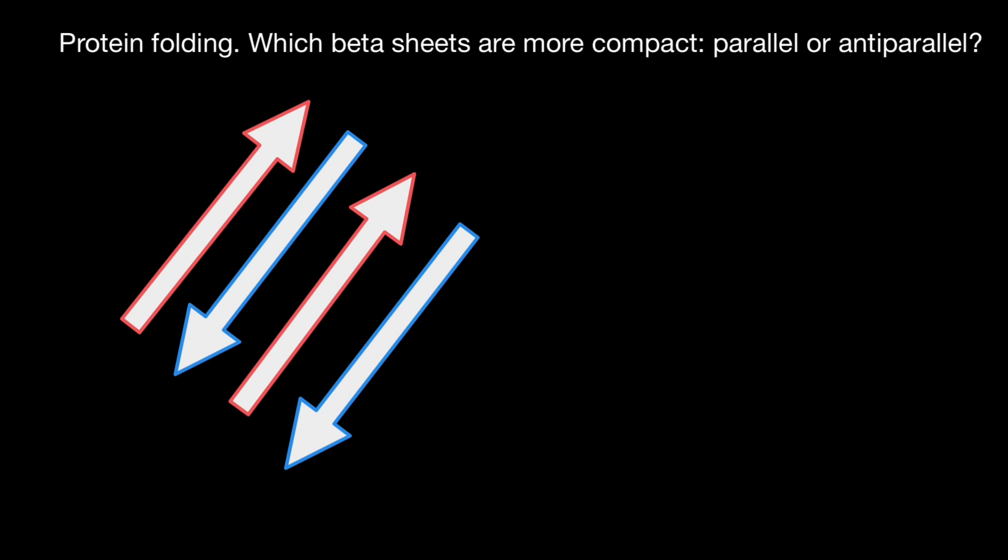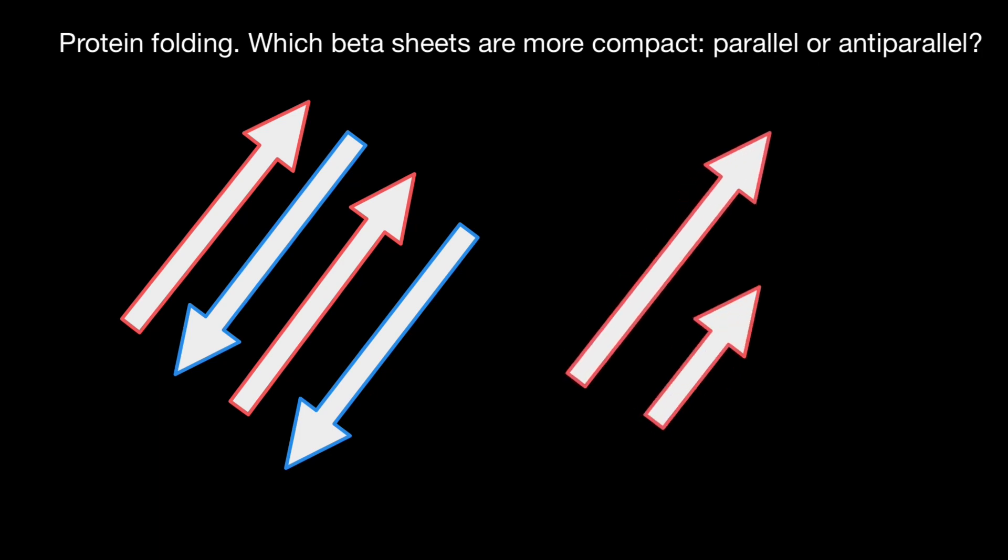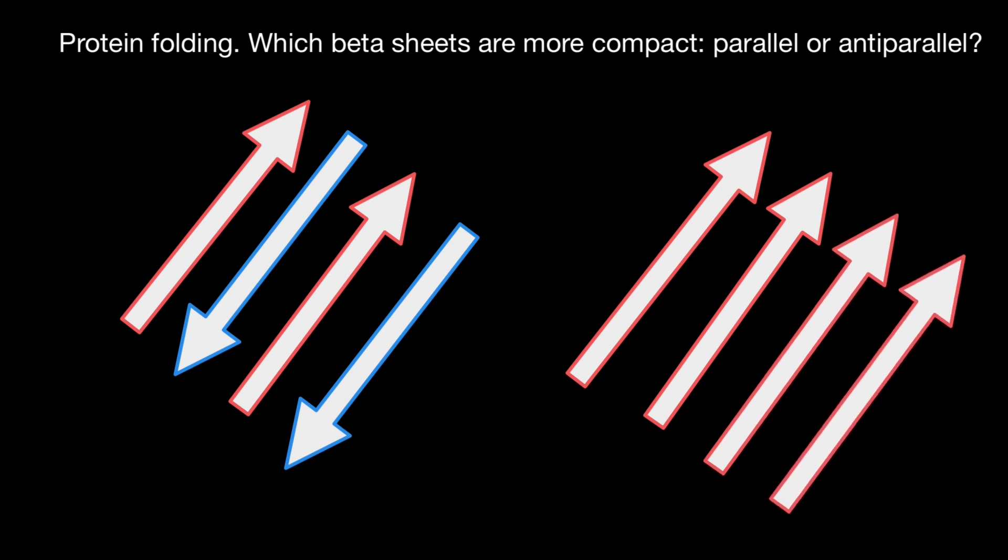But also we may have another variant when all four would go in the same direction. Three and four. Now let's add N terminus. This is beginning of the polypeptide chain.